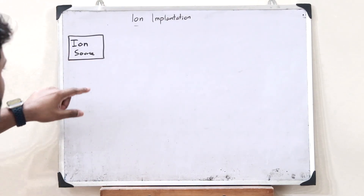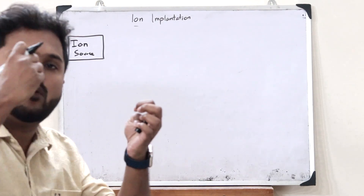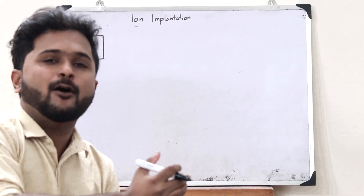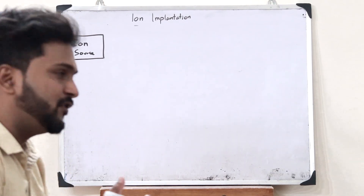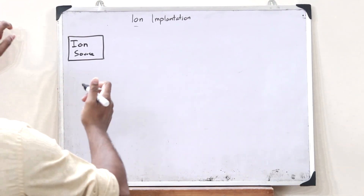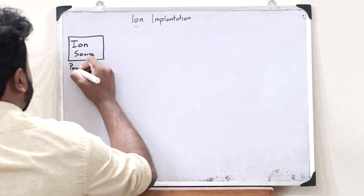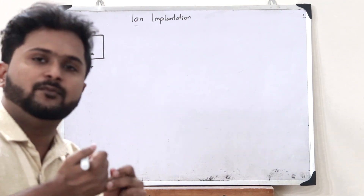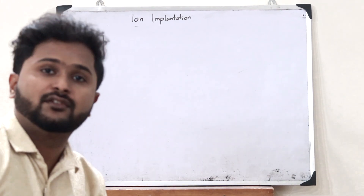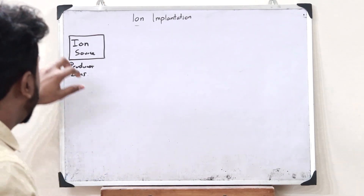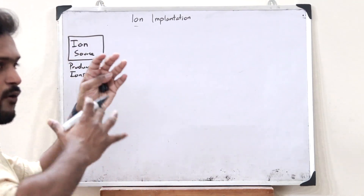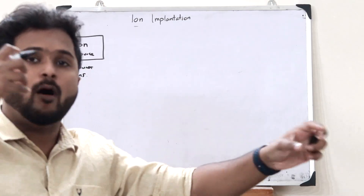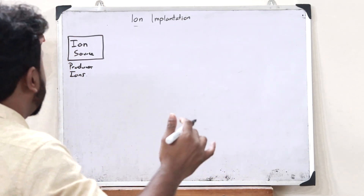For this, first we would have a particular ion source. This particular ion source provides the ions that have to be bombarded onto the particular substrate — it produces ions. Inside this ion source, the ions are converted from solid form to a vaporized form. So inside this ion source, we now have the particular ions that we need to bombard onto a particular wafer.